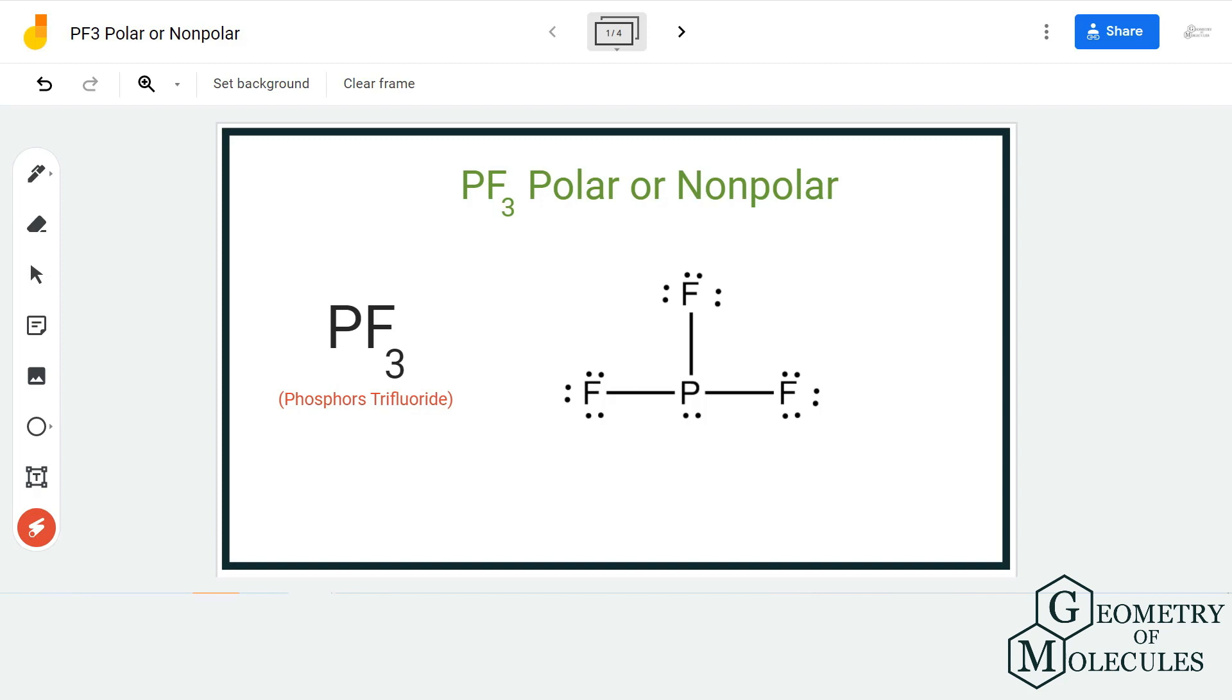Hi guys, welcome back to our channel. In today's video, we are going to help determine if PF3 is a polar or non-polar molecule. It's a chemical formula for phosphorus trifluoride, and to understand its polarity, we are first going to look at its Lewis structure.